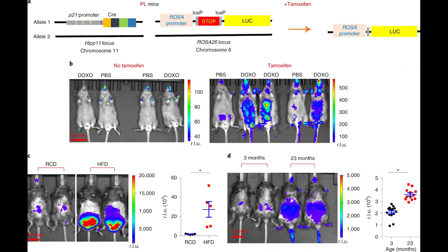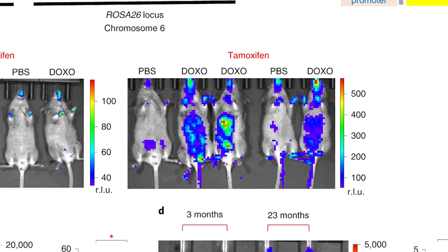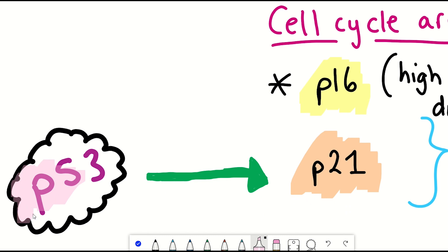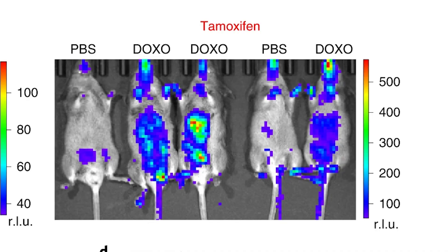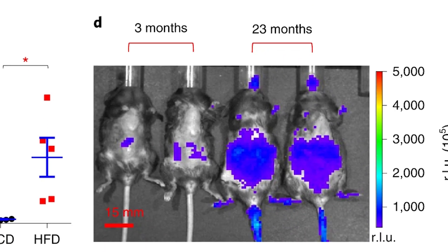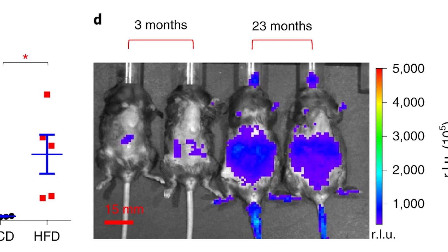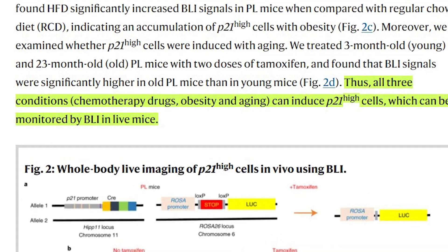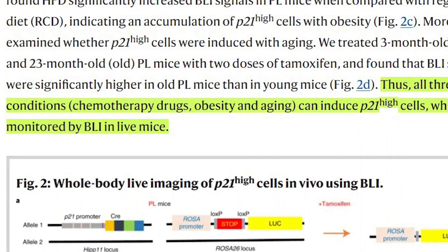And so, unsurprisingly, they saw an accumulation of P21 high cells with increased DNA damage, which makes sense as DNA damage activates P53, which would also activate P21. But they also saw these P21 high cells in mice fed a high-fat diet and more signal in older mice, comparing here 3-month-old to 23-month-old. So it seems that P21 high cells appear as you age, from a high-fat diet, and from increased DNA damage, assuming that these P21 high cells are indeed senescent cells.